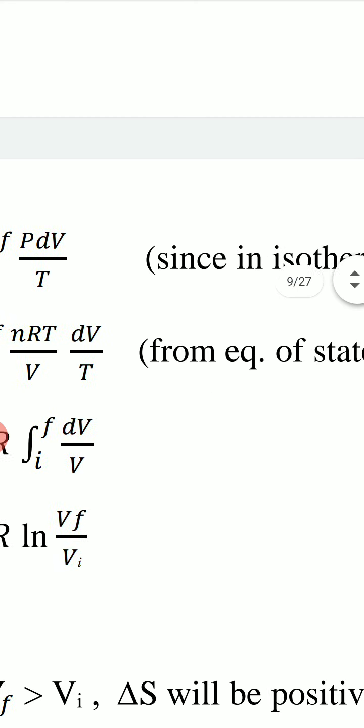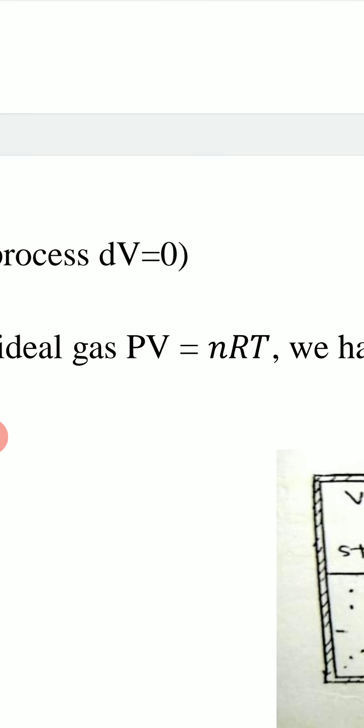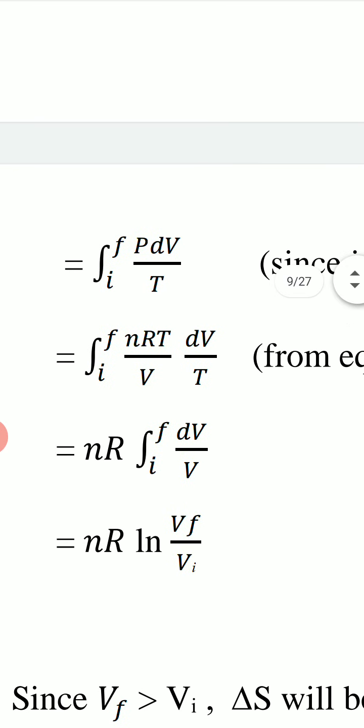From the equation of state of an ideal gas, pV = nRT, we get p = nRT/V, where n is the number of moles. Substituting into the expression, ΔS = ∫(nRT/V) dV / T. Since T is constant it cancels out, giving ΔS = nR ∫dV/V from Vi to Vf.